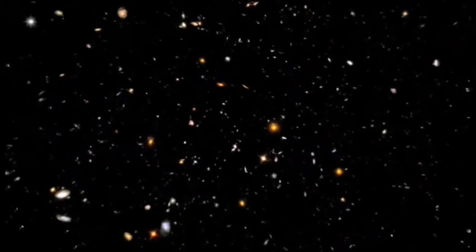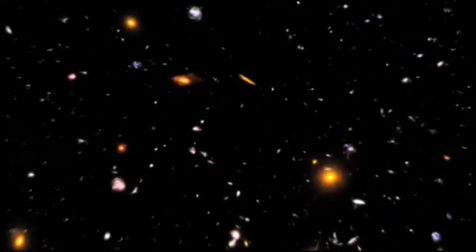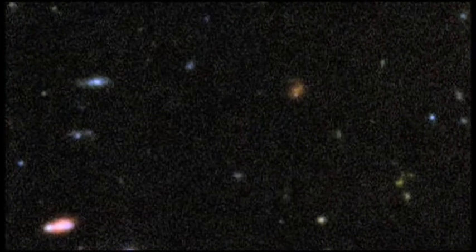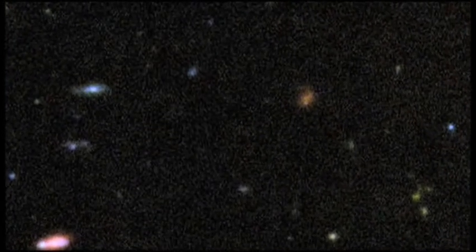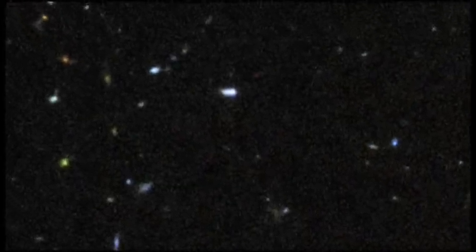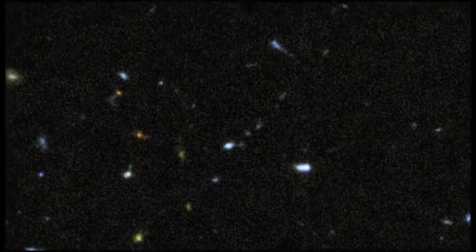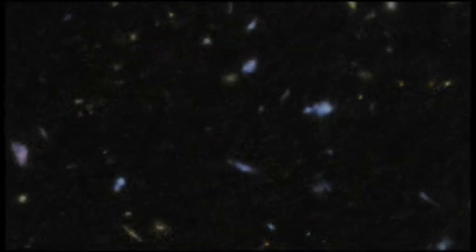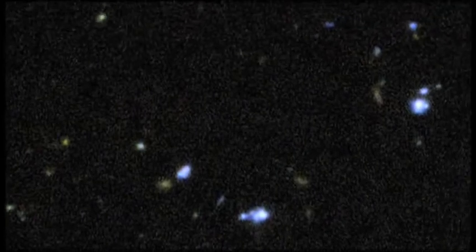These deep-field images offer incredibly clear views of the cosmos in its infancy. What drew astronomers' attention were the tiniest galaxies, covering only a few pixels on Hubble's detector. Most of them do not have the grand spiral or elliptical shapes of the large galaxies we see closer to us today. Instead, they are irregular, scrappy collections of stars.